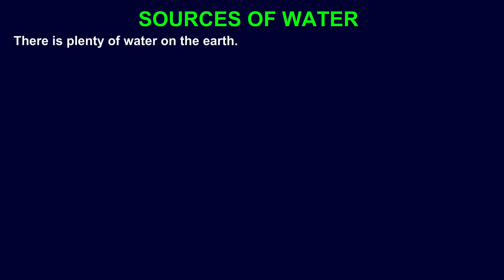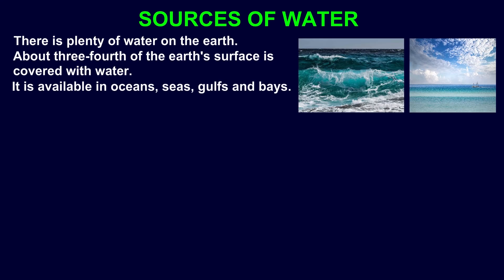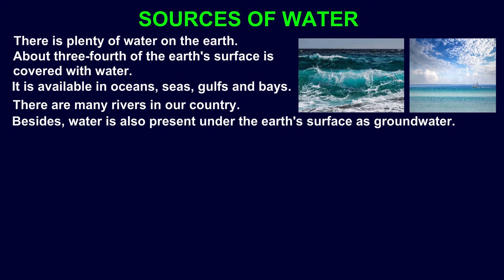Sources of Water. There is plenty of water on the earth. About three-fourths of the earth's surface is covered with water. It is available in oceans, seas, gulfs and bays. There are many rivers in our country. Besides, water is also present under the earth's surface as ground water.